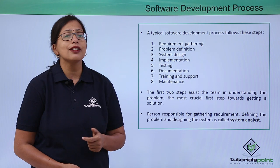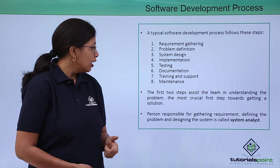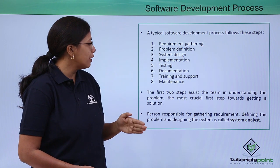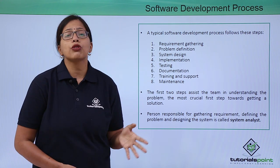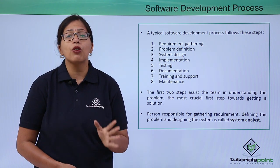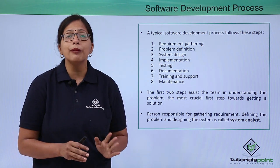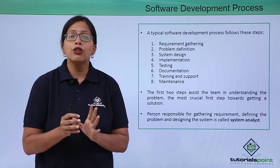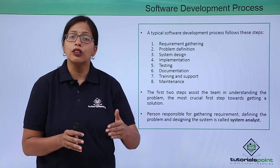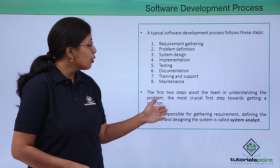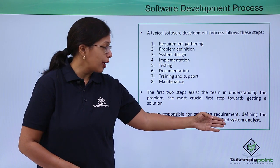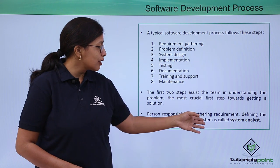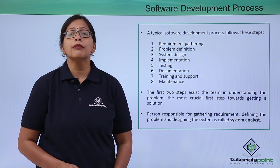The first two steps — requirement gathering and problem definition — are the most crucial first steps towards understanding and defining a problem. They are very important to get your software development process on track. The person who is responsible for gathering the requirements, defining the problem, and designing the system is called a system analyst.